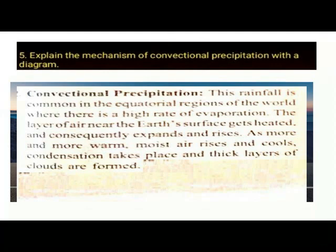Detail 5. Explain the mechanism of convectional precipitation with a diagram. Convectional precipitation: This rainfall is common in the equatorial regions of the world where there is a high rate of evaporation. The layer of air near the Earth's surface gets heated and consequently expands and rises. As more and more warm moisture rises and cools, condensation takes place and thick layers of clouds are formed.